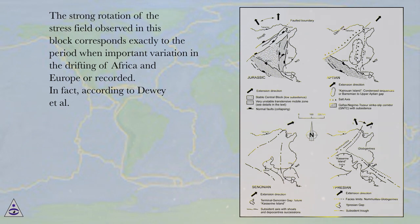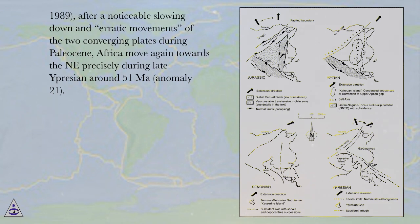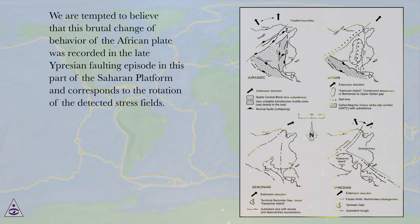In fact, according to Dewey et al., 1989, after a noticeable slowing down and erratic movements of the two converging plates during Paleocene, Africa moved again towards the knee precisely during late Uprisian around 51 Ma, Anomaly 21. We are tempted to believe that this brutal change of behavior of the African plate was recorded in the late Uprisian faulting episode in this part of the Saharan platform and corresponds to the rotation of the detected stress fields.